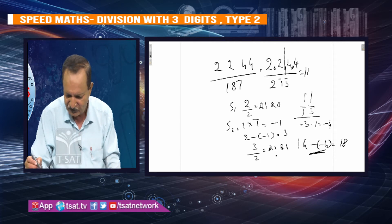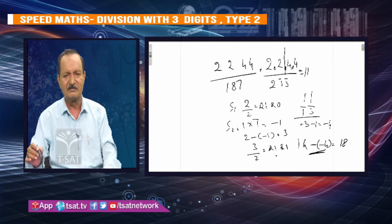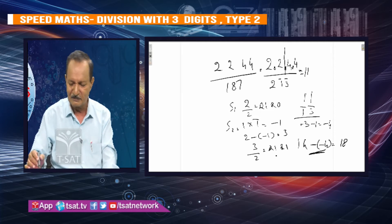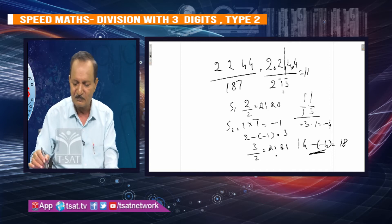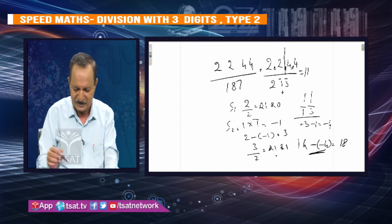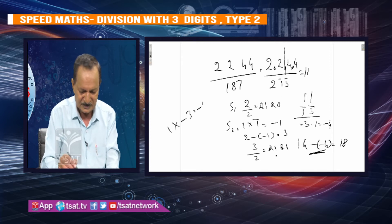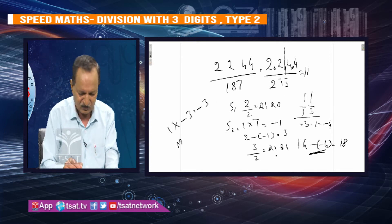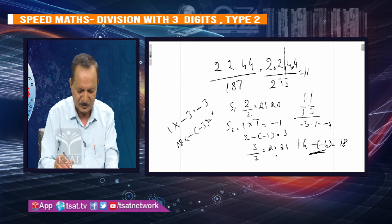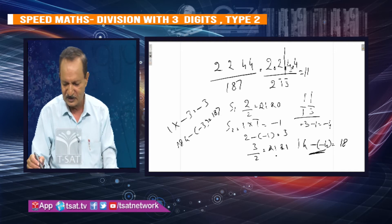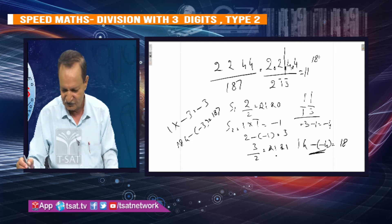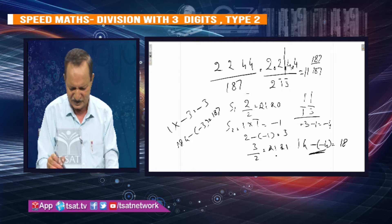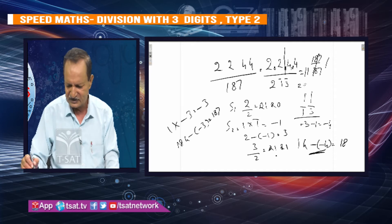This is 184. The last two digits: 1 into minus 3 is minus 3. 184 minus of minus 3. That is 187. 184 minus of minus 3 is the remainder. 187 by 187 — so the answer is solved.